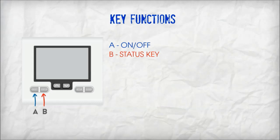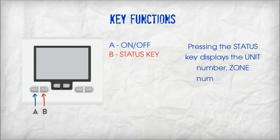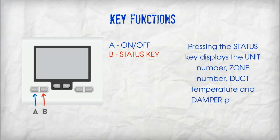Function key B: status key. Pressing the status key displays the unit number, zone number, duct temperature, and damper position.